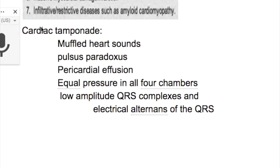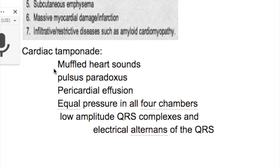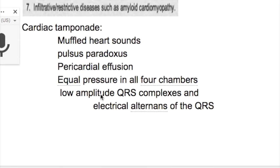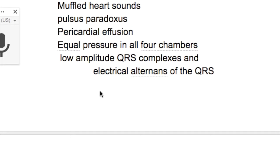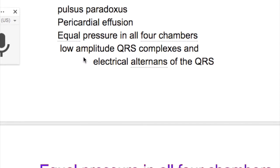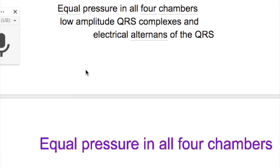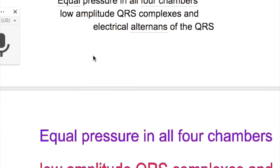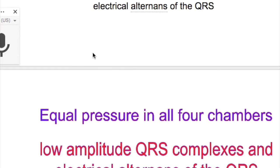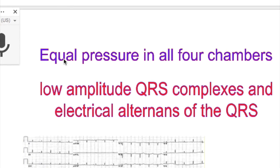What are the clinical features of cardiac tamponade? They include muffled heart sounds, pulsus paradoxus, pericardial effusion, equal pressure in all four chambers, low amplitude QRS complexes, and electrical alternans of the QRS complexes.